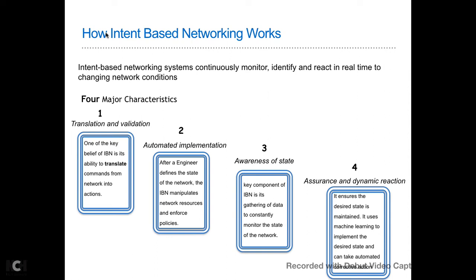If you join all four pillars — translation and validation, plus automated implementation, plus awareness of state, plus assurance and dynamic reaction — that makes the overall intent-based networking system. In a nutshell, an intent-based networking system gives a network administrator the ability to define what they want the network to achieve, making it a more automated network management platform.